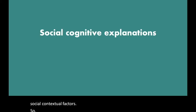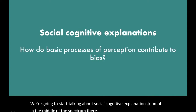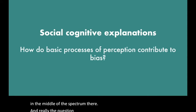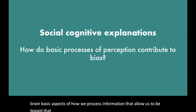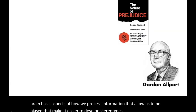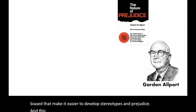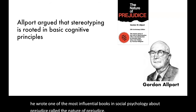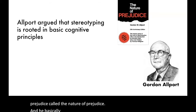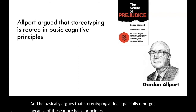We are going to start talking about social cognitive explanations, kind of in the middle of the spectrum. The question here is whether there are basic aspects of how we process information that make it easier to develop stereotypes and prejudice. This idea was really developed by Gordon Allport, who wrote one of the most influential books in social psychology about prejudice, called The Nature of Prejudice. He basically argues that stereotyping at least partially emerges because of these more basic principles of how we interpret different information.